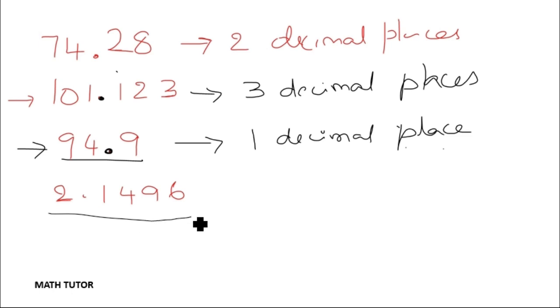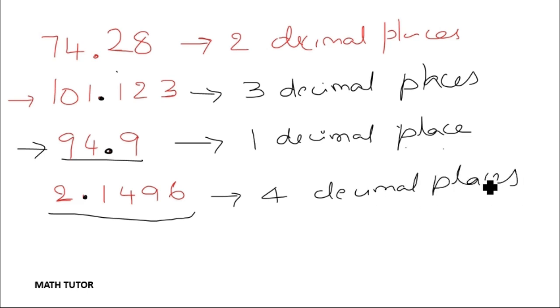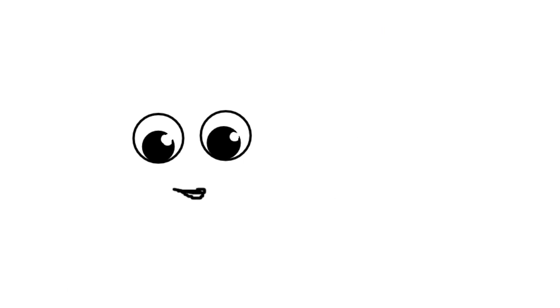And the last one, 2.1496 - after the point how many are there? One, two, three, four - which means this number has four decimal places. Now it's your turn. Thank you for watching, keep watching for more videos.